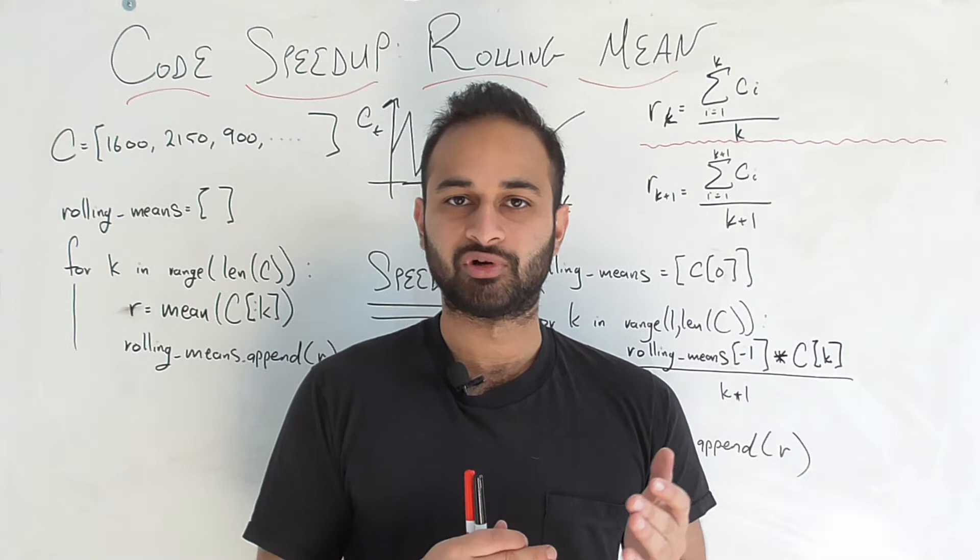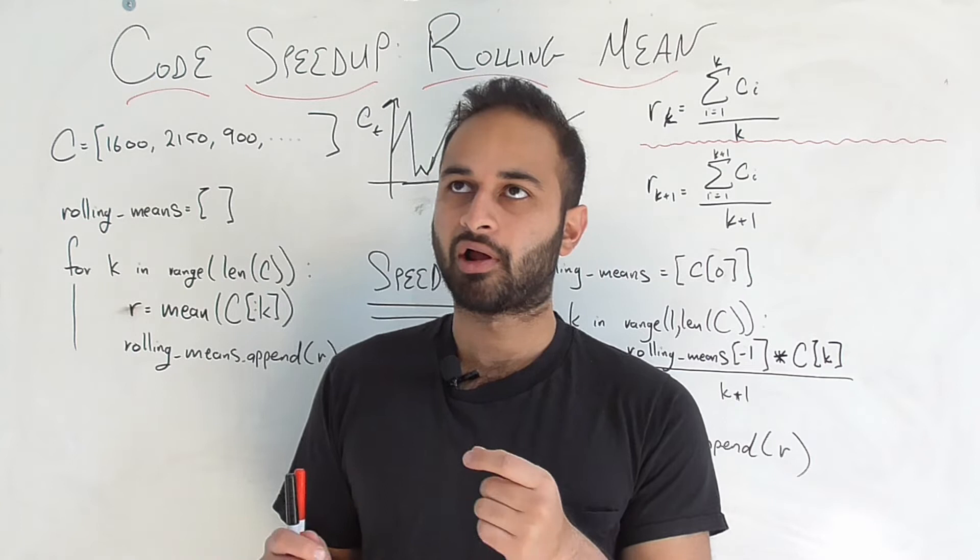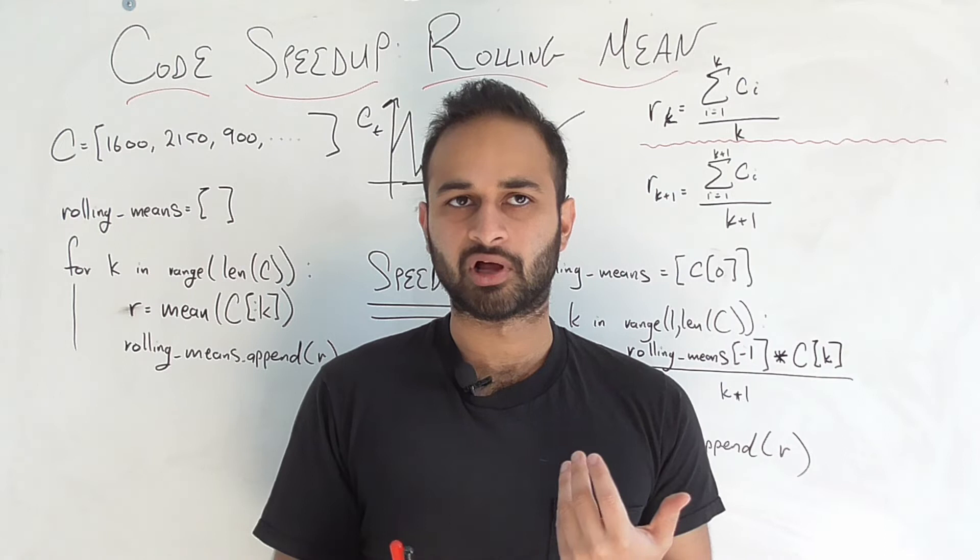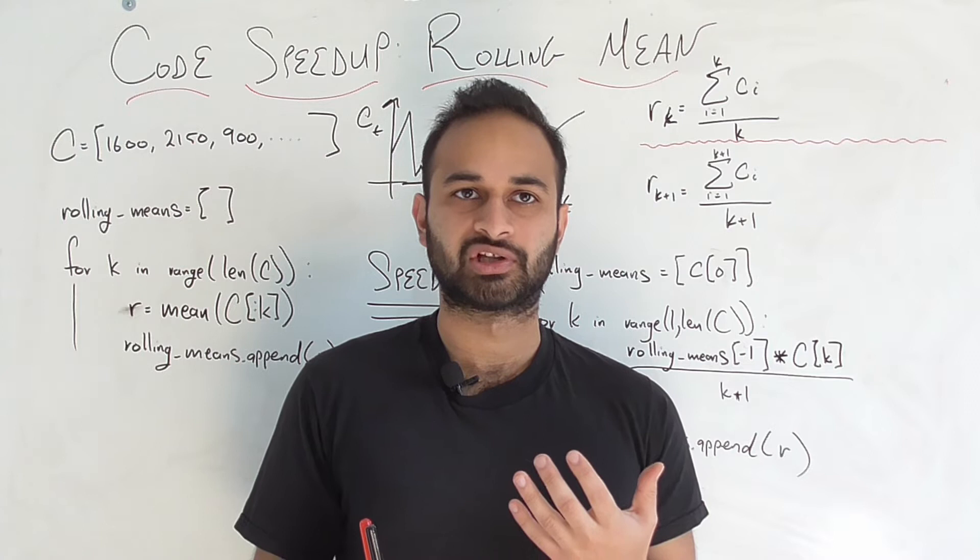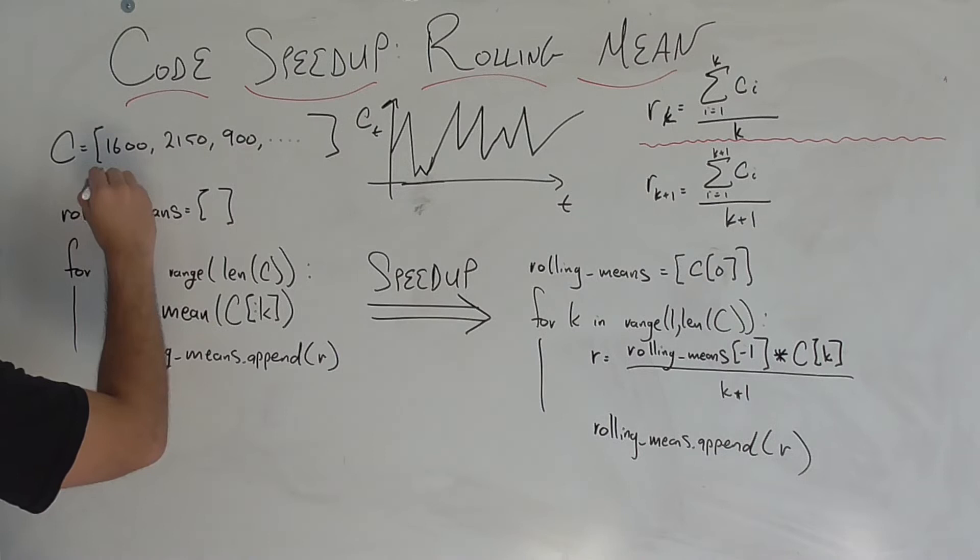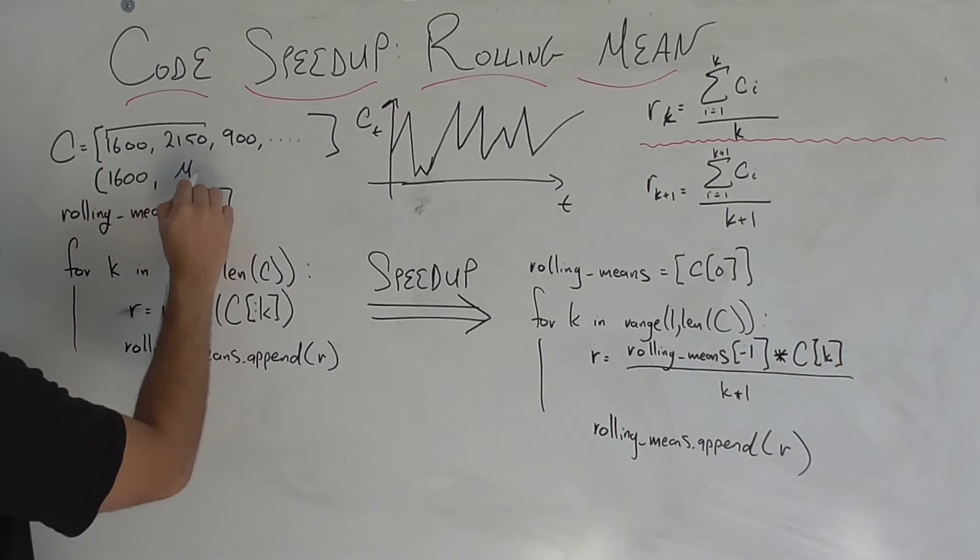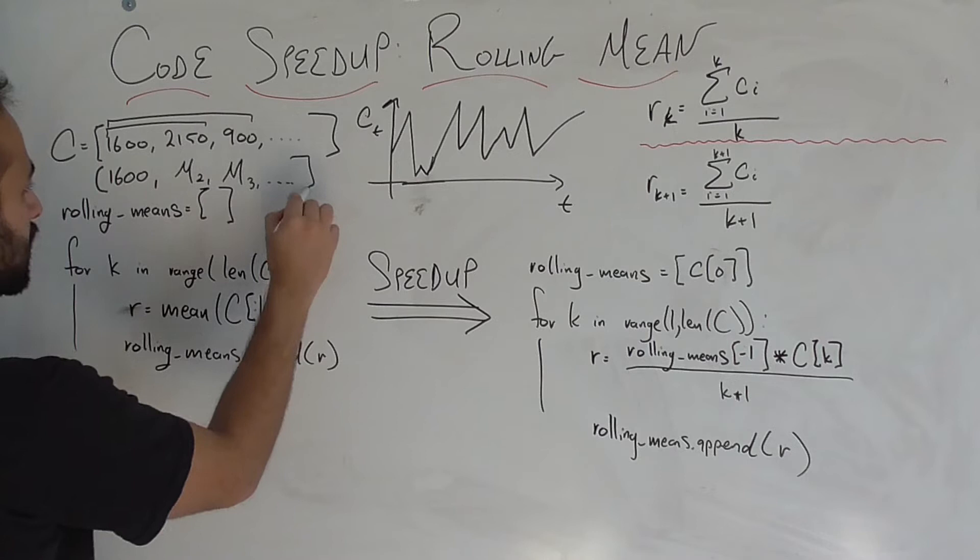A lot of times what you care about is the rolling mean, which means you're not plotting the number of calories you ate every single day, but maybe you're plotting some kind of rolling average. For those of you who aren't familiar, a rolling average is basically saying that if I have some list, the rolling average is computed as the first element is always the same. The second element is the average of these two elements, the third element is the average of these three elements, and so on.